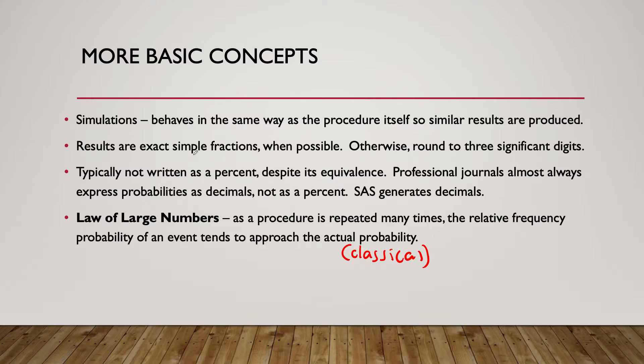Express the results as exact simple fractions for these probabilities when possible. We usually round it to three significant digits. It's typically not written as a percent, despite the equivalence. Professional journalists almost always express probabilities as decimals, not percents. If we were to use SAS for any calculations, it would give us a decimal.